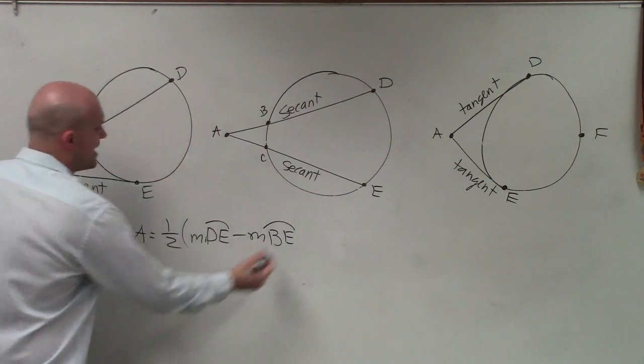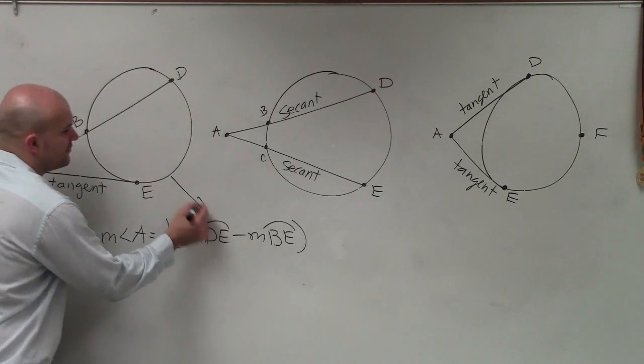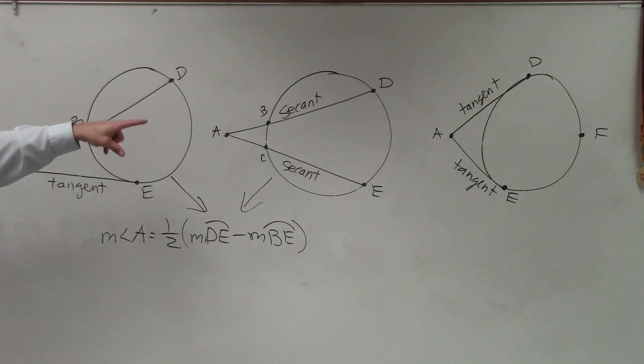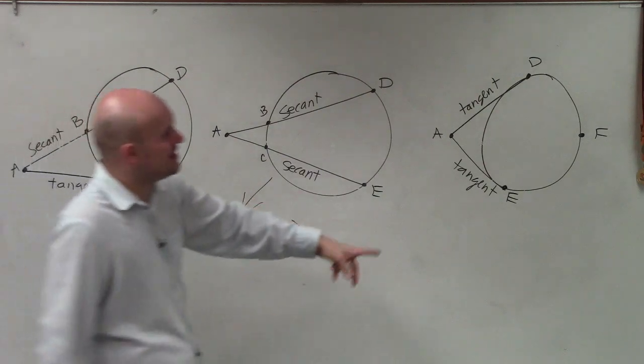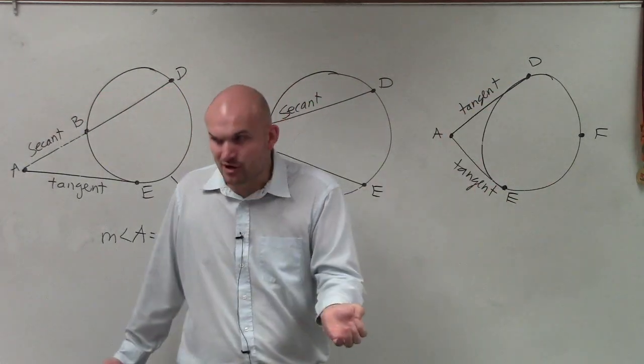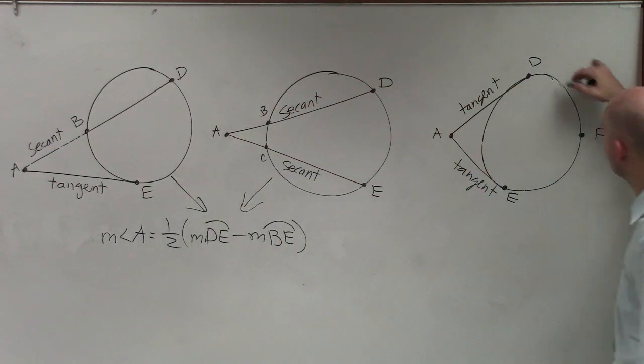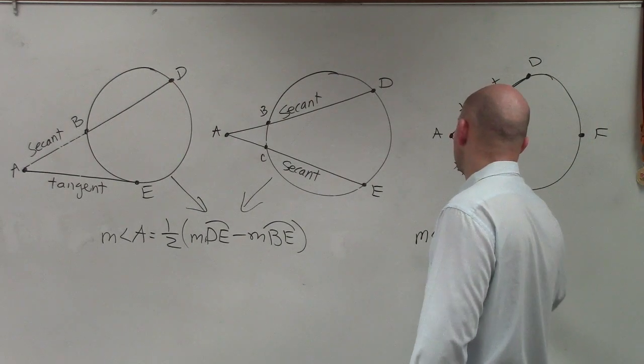So it doesn't matter, ladies and gentlemen, if you're talking about a tangent and a secant, or two secant lines, the formula that you're going to use is going to be the same. Now the formula for tangent and tangent is also the same. But the problem is, if I say DE minus DE, then you're going to get zero, right? So I have to make sure I quantify what exactly the arc is. So I'm going to just label it differently. But it's really doing the same thing.